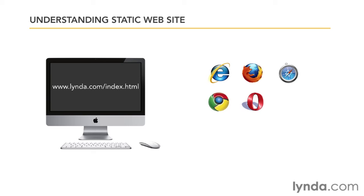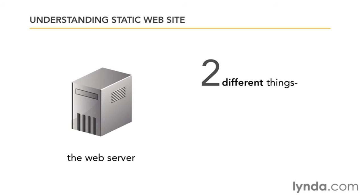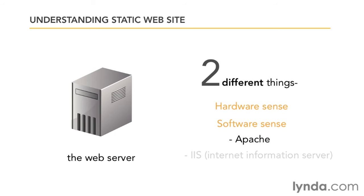The request for the web page goes from your computer, also called the client, to the web server. Server is a tricky word that means two different things. In the hardware sense, a server is a very powerful computer that is shared in some way. Server can also be used in the software sense — software designed to serve up web pages. Apache and Internet Information Server are examples of server software compatible with Joomla. The web server is frequently used interchangeably with the web host, which is a service that offers web servers for your use.